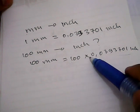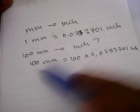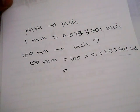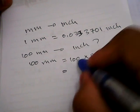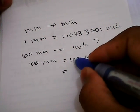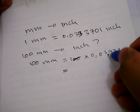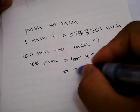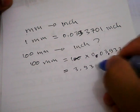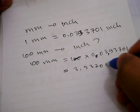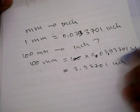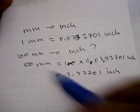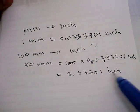Now let's go ahead to the result. 100 multiplied by 0.0393701 equals 3.93701 inches. Well that's it, that's the result of our equation problem. So 100 millimeters is